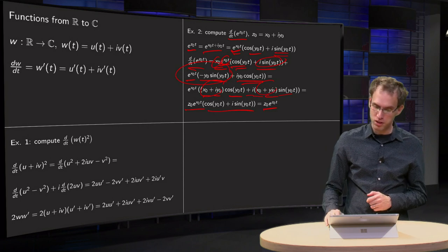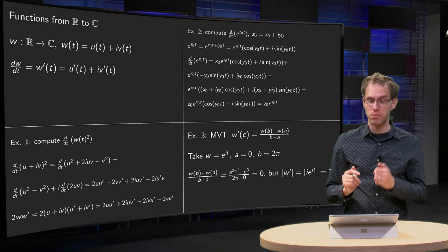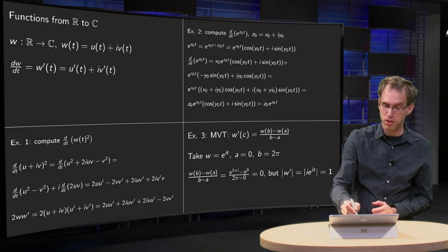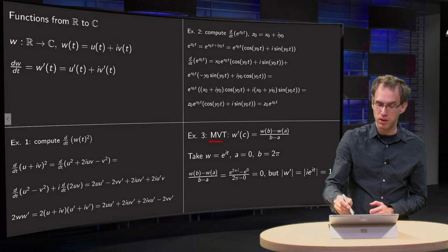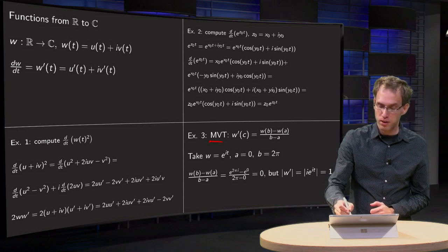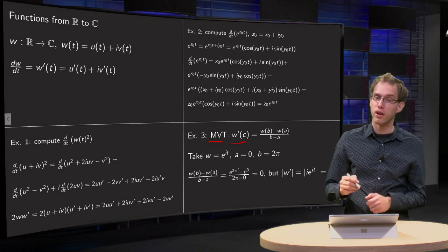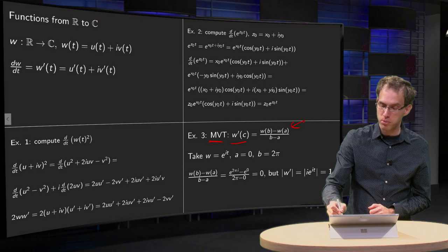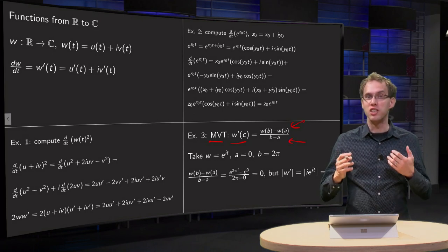There are some differences though, as we will see in the third example. In the mean value theorem for calculus, we have some point c between a and b where the derivative equals (w(b) − w(a)) / (b − a).